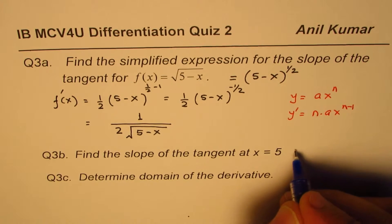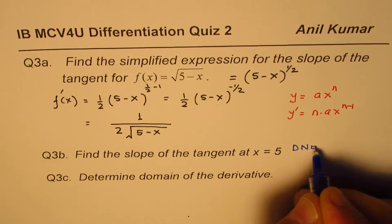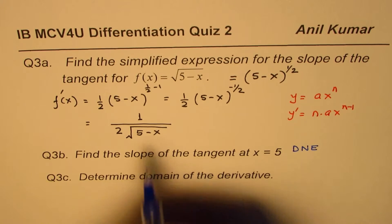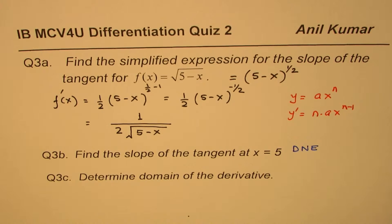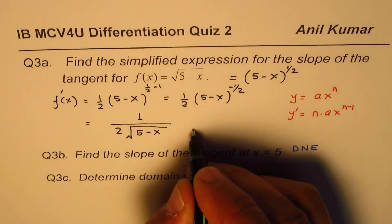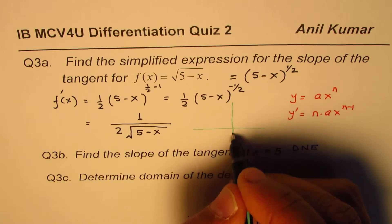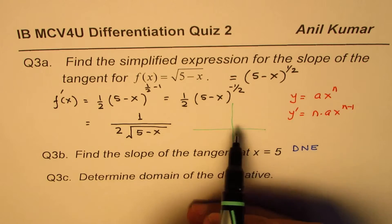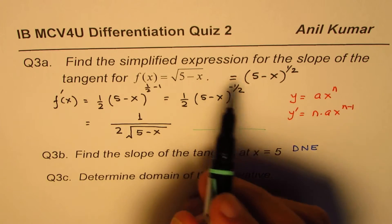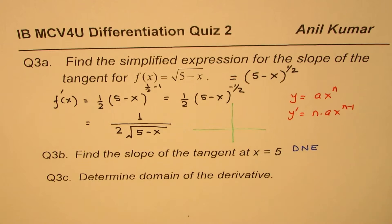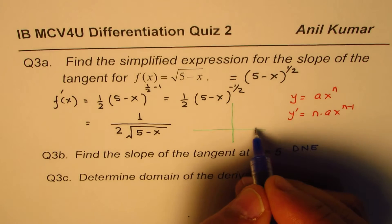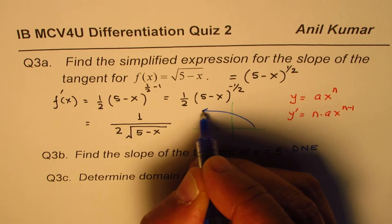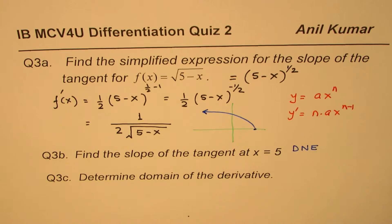So it is undefined. We can say it does not exist. As you know, the graph of this function is reflected and moved 5 units to the right. So the graph of this curve is kind of like this, and this is kind of a corner. So it does not exist at this point.